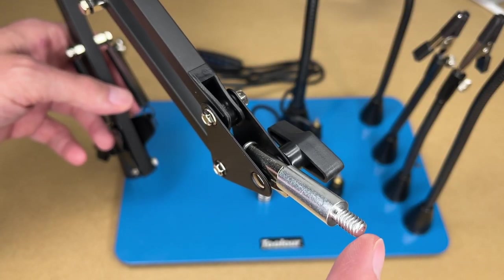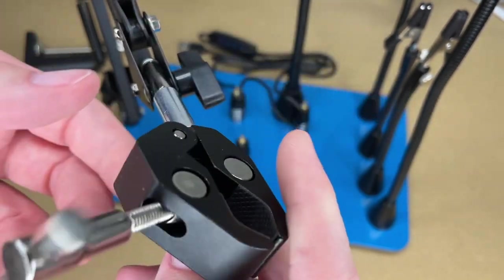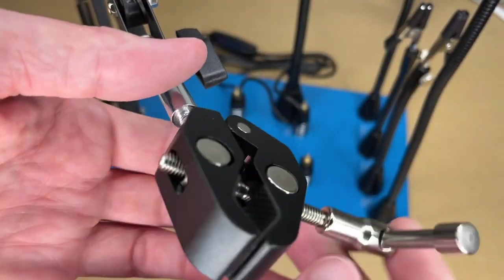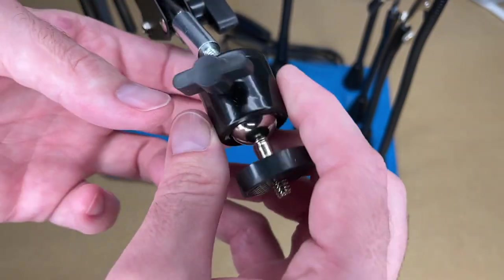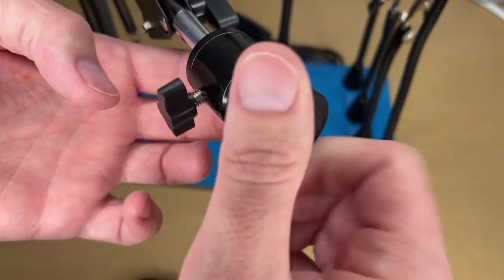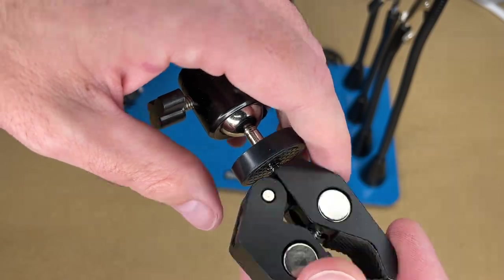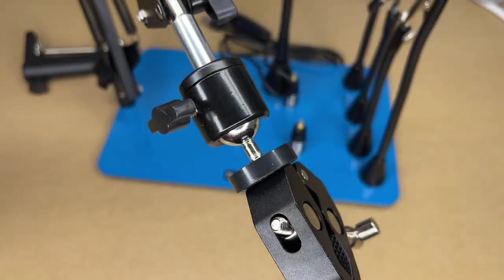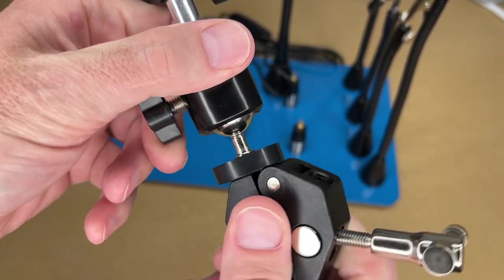Now on the end of this arm we have a 1/4-20 thread, and we can screw on this clamp. We can screw that on, but that's not going to give us the full functionality if we do that, because it'll end up at a specific angle. So it came with this gimbal, and this is going to give us greater adjustability. We'll screw this on, and then we'll screw this on the end. So now this is upside down, we can loosen this and rotate it to whatever angle we want.